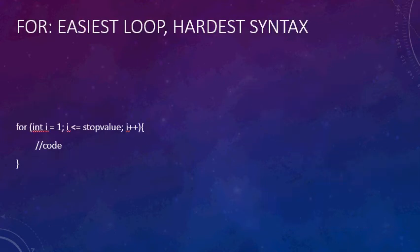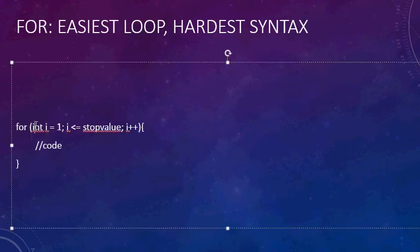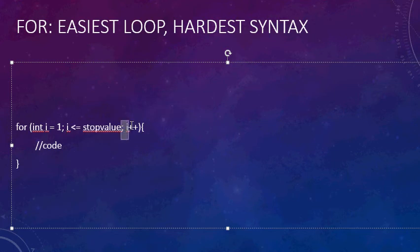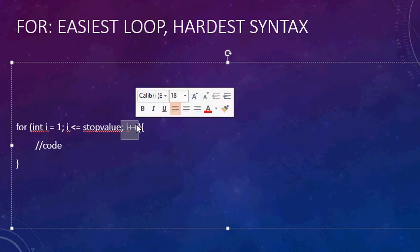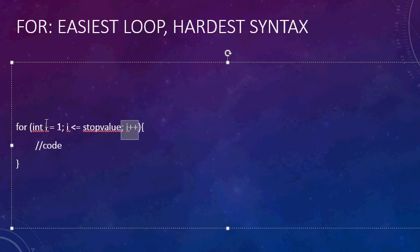Finally, here's your for loop. This is the easiest loop to code, but it has the hardest syntax — the one that confuses people the most. You'll want to stay away from for loops just because they seem complicated, but they're actually the simplest to implement. The syntax is: 'for', then you declare a counter variable, semicolon, then a stopping condition involving your counter, semicolon, then your increment. Nine times out of ten the increment is just i++, but you could also increment by two every loop.